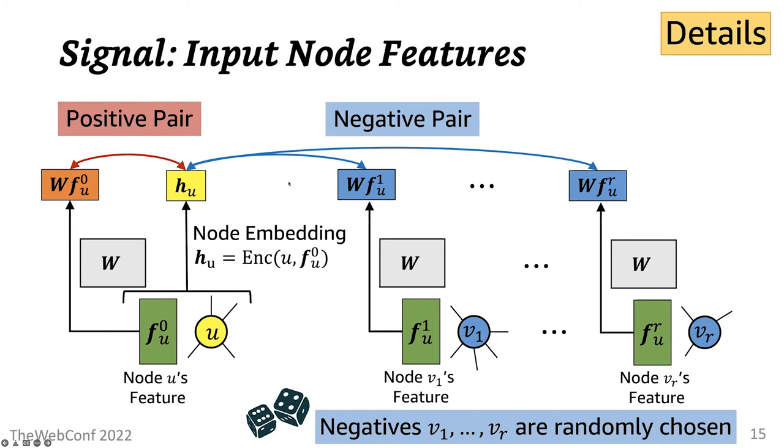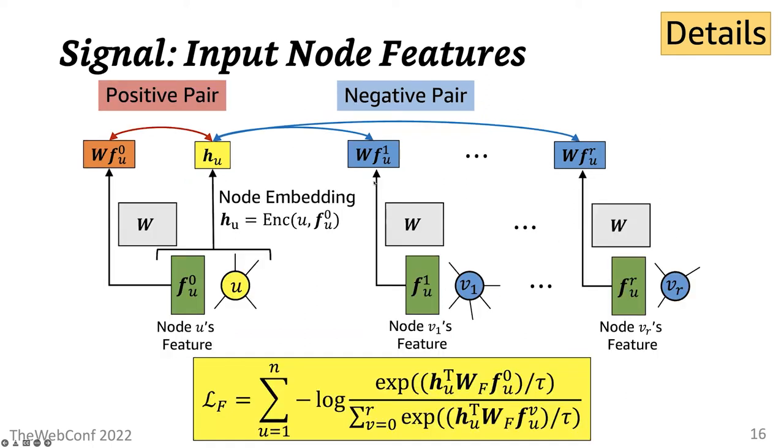Then as negative samples, we randomly select nodes from the graph and take their linearly transformed input features, shown here as these blue boxes, to be the negative samples. Then with these positive and negative pairs, we can perform contrastive learning by optimizing this loss function.